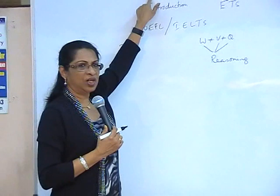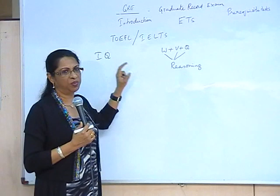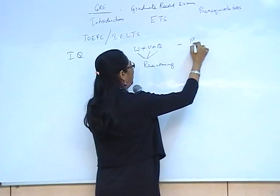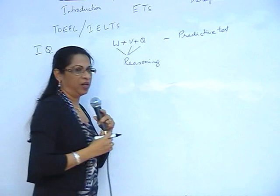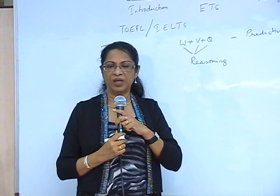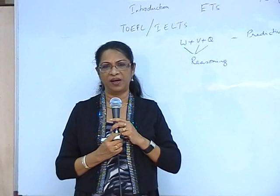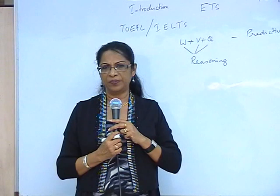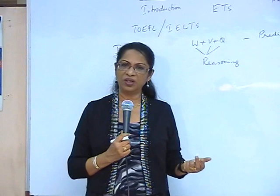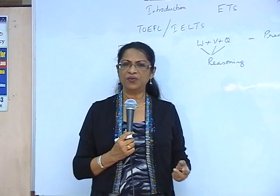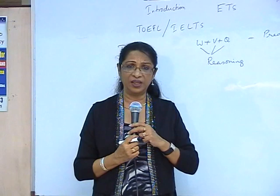The GRE is supposed to give the universities a glimpse as to how you are going to perform once you join the course curriculum there, because the GRE is also a predictive test. It predicts how you will be able to perform once you join the course curriculum. From a survey made among students who have joined courses in universities in America, it's been found that students with a good GRE score are proportionately able to do better in the course curriculum than those who have not got a good GRE score. Therefore, the admission offices in American universities universally accept the GRE as a measurement of your ability to do well in the course curriculum.